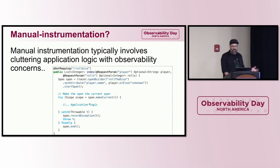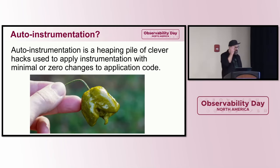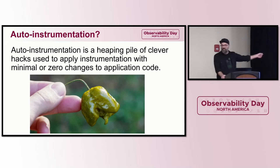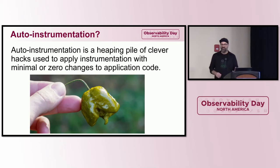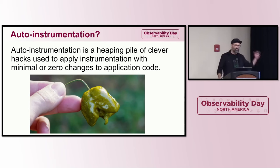Here's an example taken from some docs. My spicy take — and this is the Reaper X pepper, the hottest pepper in the world — I assert that auto instrumentation is just a heaping pile of hacks that allow you to apply instrumentation to existing code with little to no change. That's what auto instrumentation as a concept is.